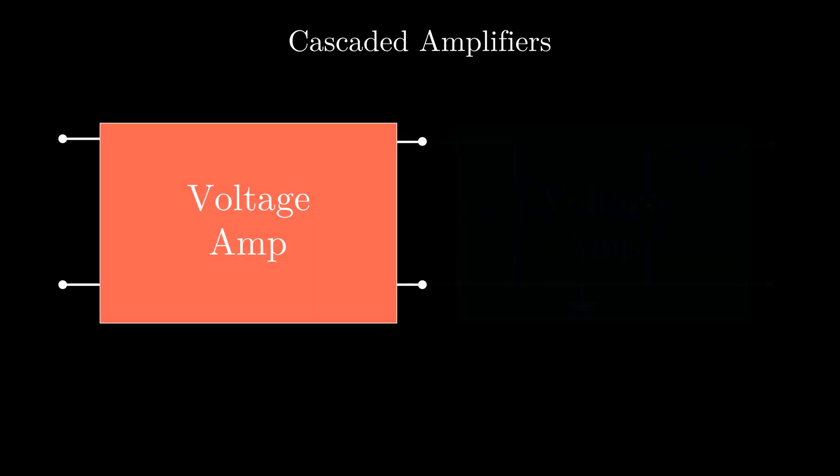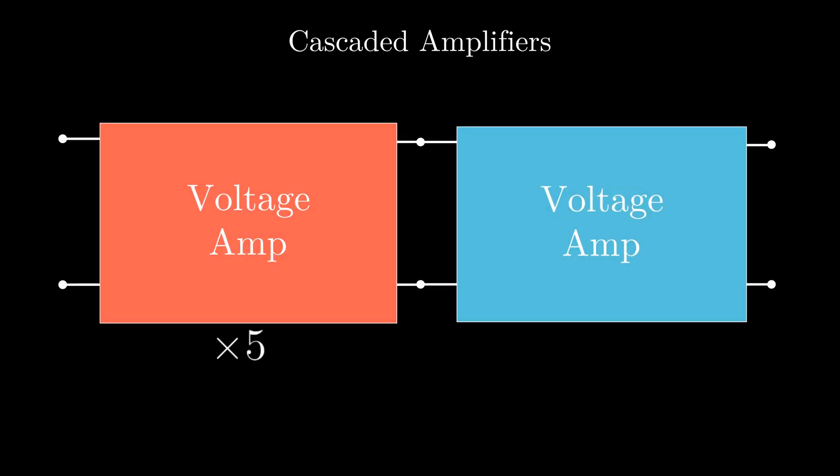To really understand how the input and output resistances affect the gain, let's cascade two voltage amplifiers. Both have an open circuit gain of 5, which means if we give an input of say 20 millivolts, the first stage amplifies it to 100 millivolts and the second stage amplifies it to 500 millivolts. But practically, it's not that simple.